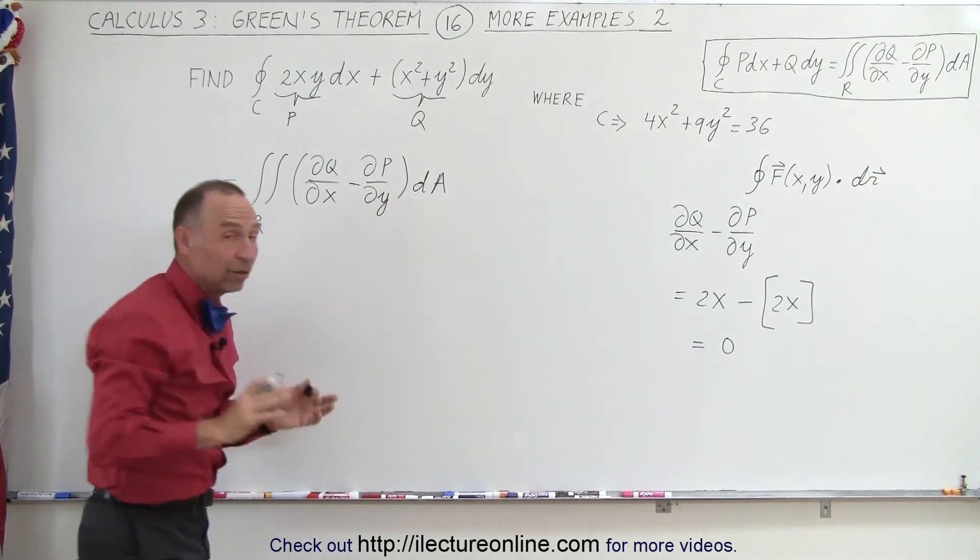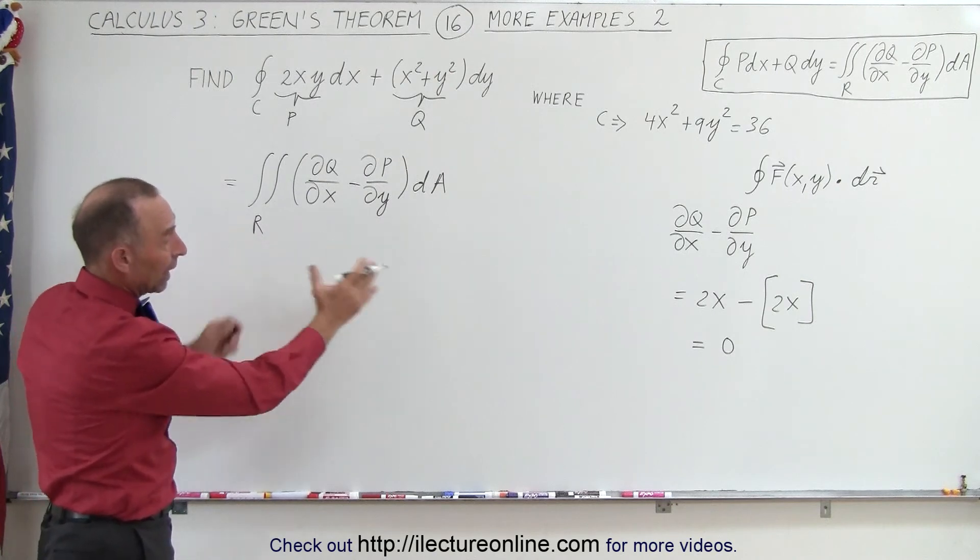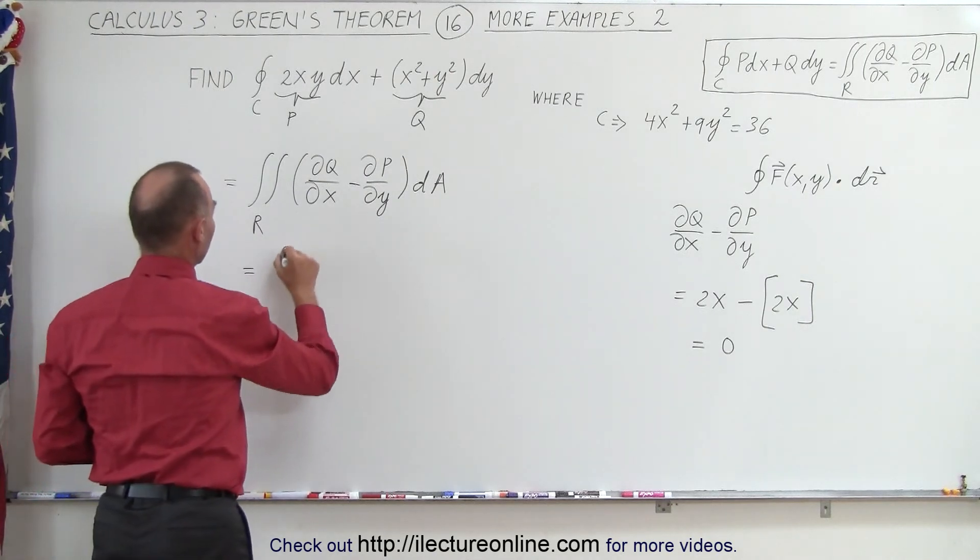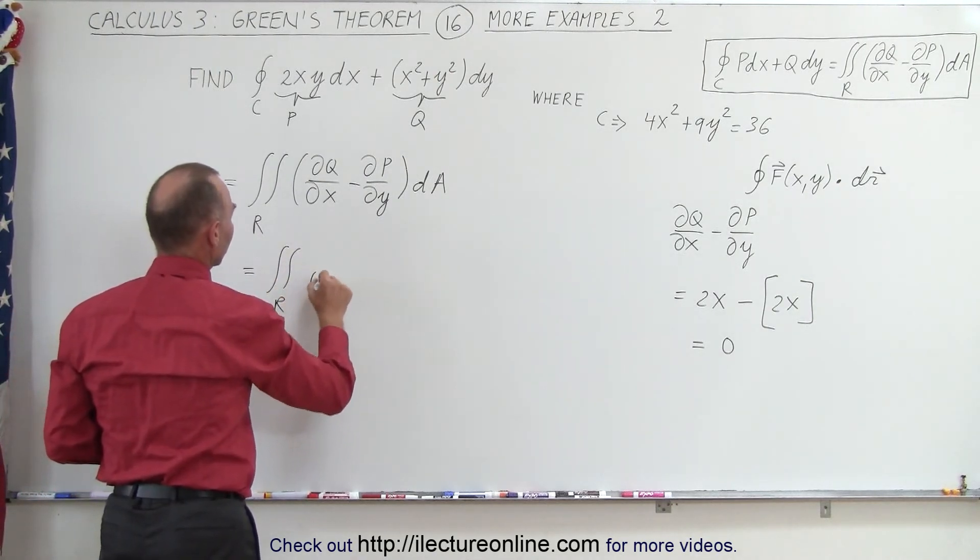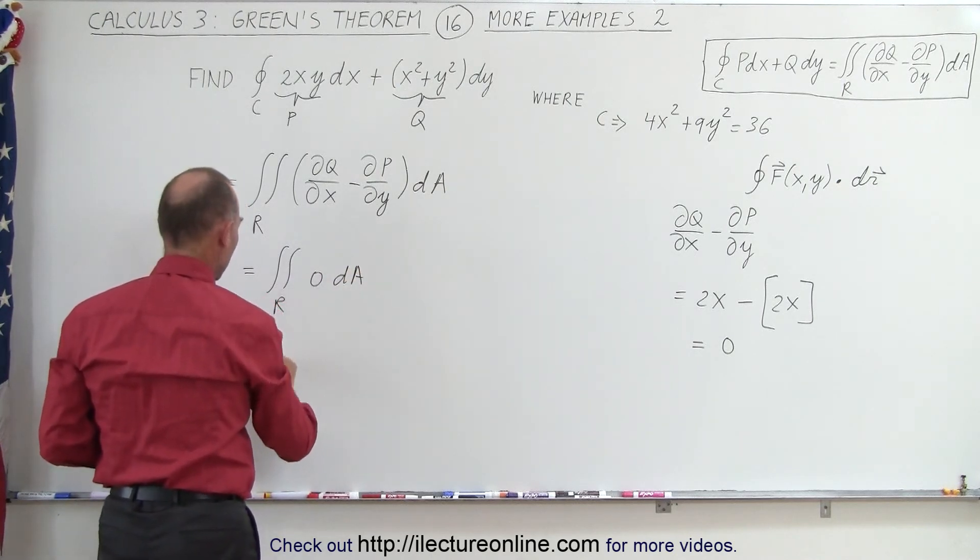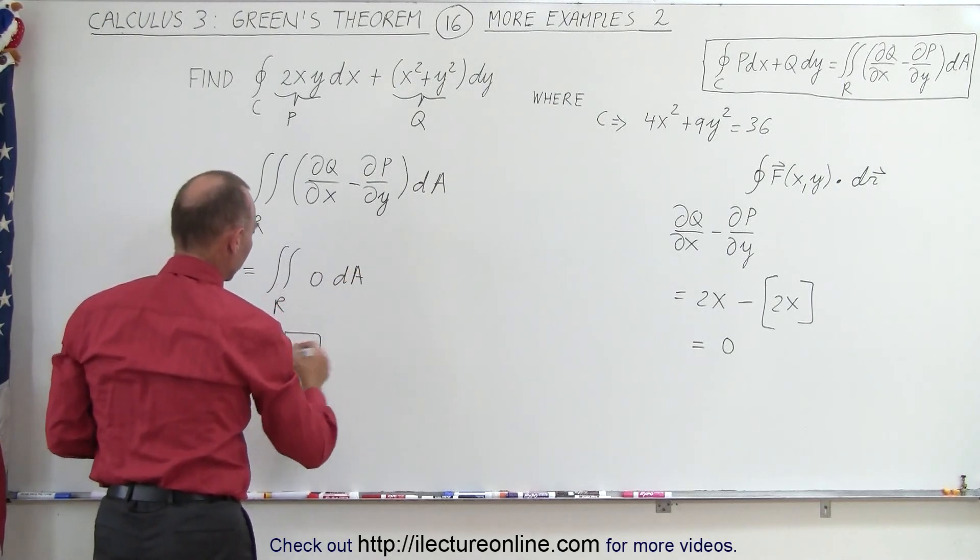So this becomes equal to the double integral over the region of 0 times dA and of course since we have a 0 to begin with that would be equal to 0.